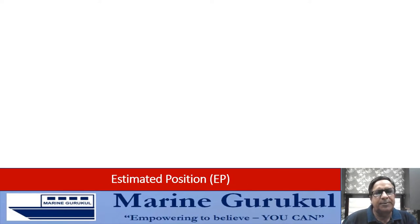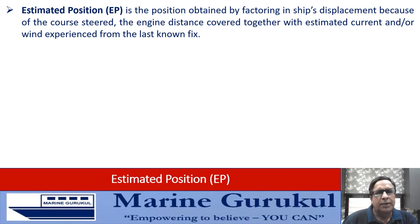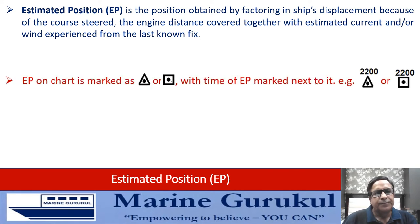The next is the estimated position (EP). It is the position obtained by factoring in the ship's displacement because of the course steered and engine distance covered, together with the estimated current and/or wind experienced by the vessel during that interval. EP on the chart is marked with a triangle or a square with a dot in the center, and the time can also be mentioned against the symbol.